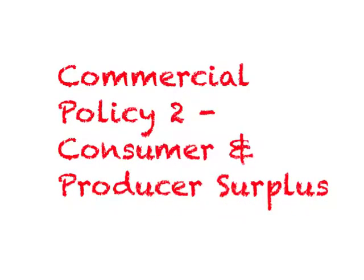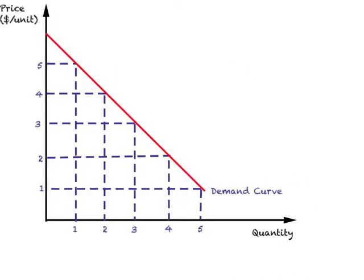As a first step, I'll explain what we mean by consumer surplus. All of us are familiar with the demand curve, which is downward sloping. When a demand curve is downward sloping, this represents that people are willing to buy more at a lower price and less at a higher price. What do different points on the demand curve show?